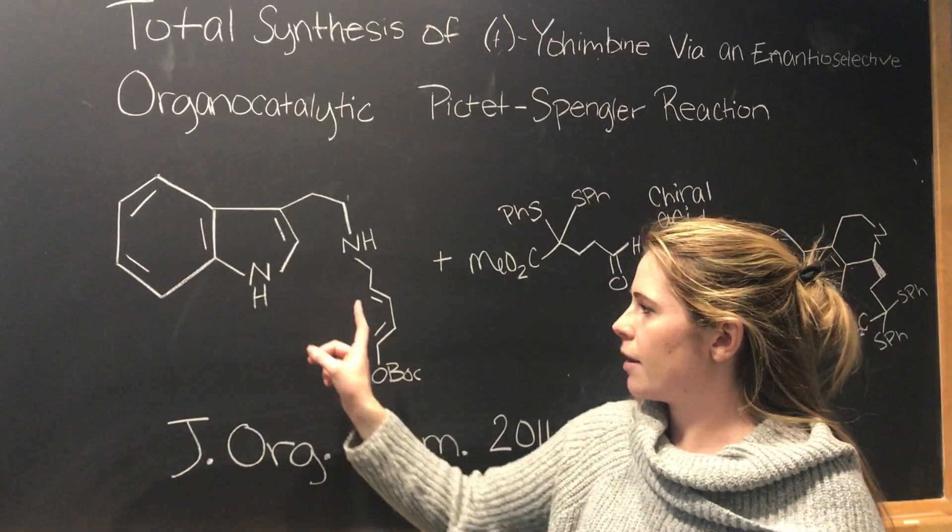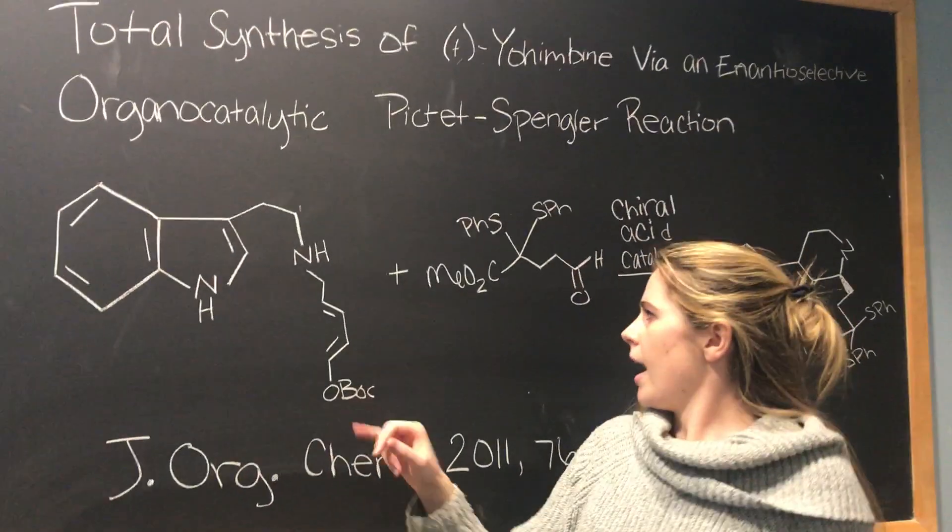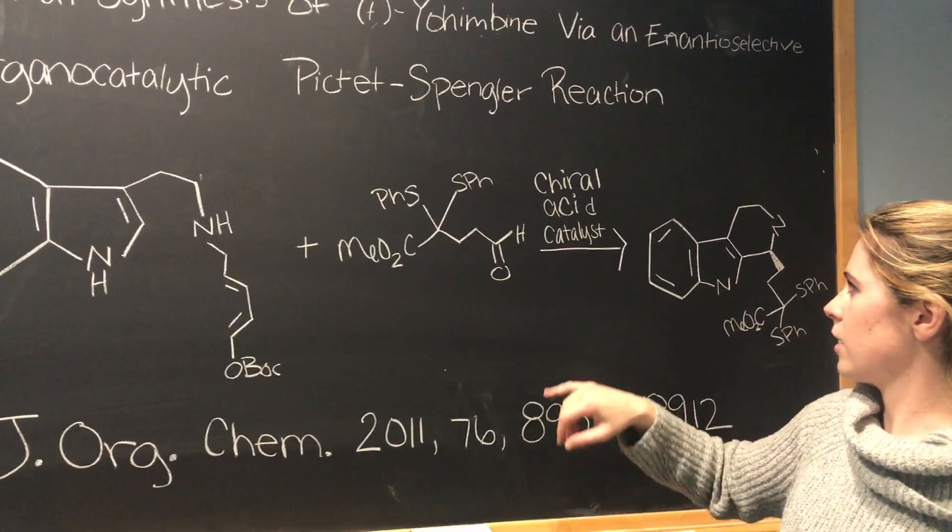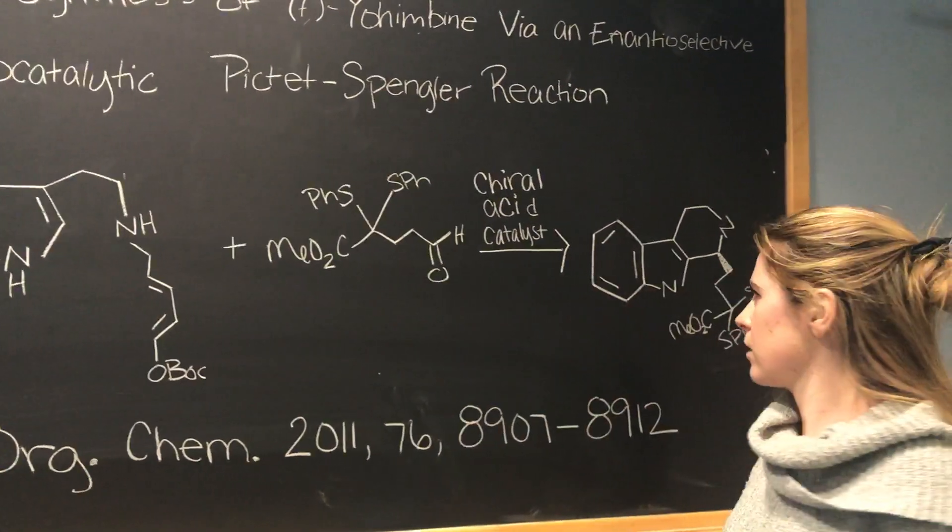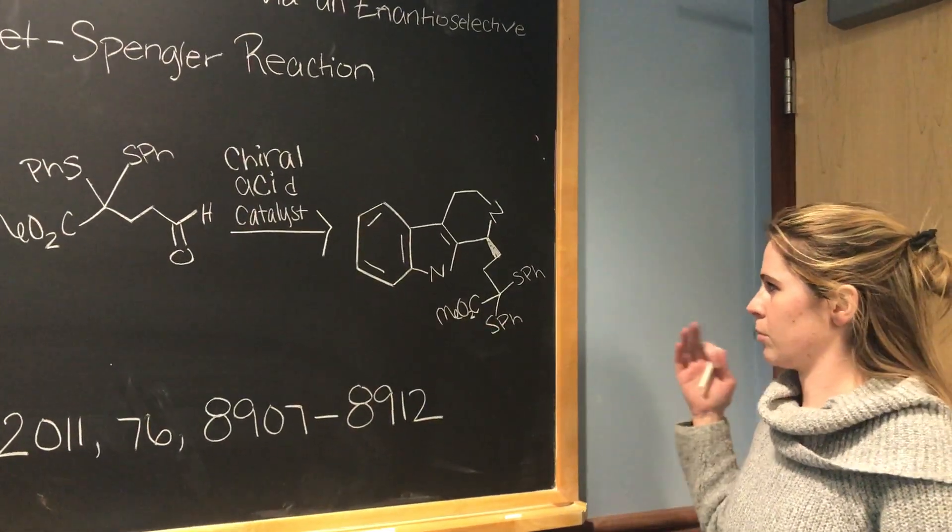For their aromatic region, they used an indole, which is also very common for this reaction. Their electrophile was this aldehyde. They used a chiral acid as their catalyst, and that yielded the tetrahydroisoquinoline product.